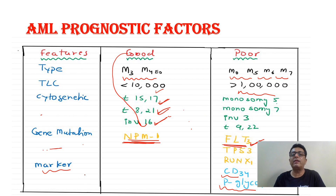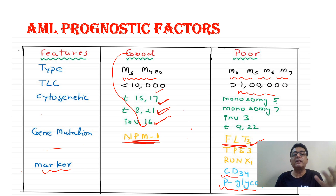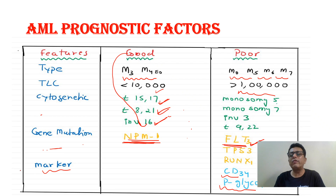Poor prognostic factors in AML, good prognostic factors in AML — certain translocations carry good prognosis; Philadelphia chromosome carries poor prognosis. The purpose of this class is to make you remember things: changes in iron deficiency anemia, multifactorial disorders, Down syndrome antenatal markers — which increase, which decrease. AML and ALL good and poor prognostic factors. These questions come every two to three years.